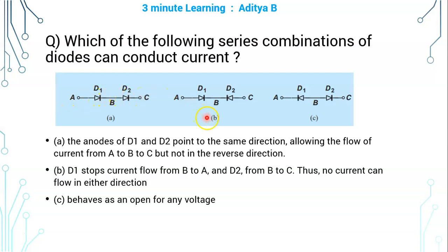In Figure B, if the potential at terminal A is greater than the potential at terminal C, then D1 will conduct but D2 will not conduct. Likewise, if the potential at C is greater than the potential at A, then D2 will conduct but that will be opposed by D1.